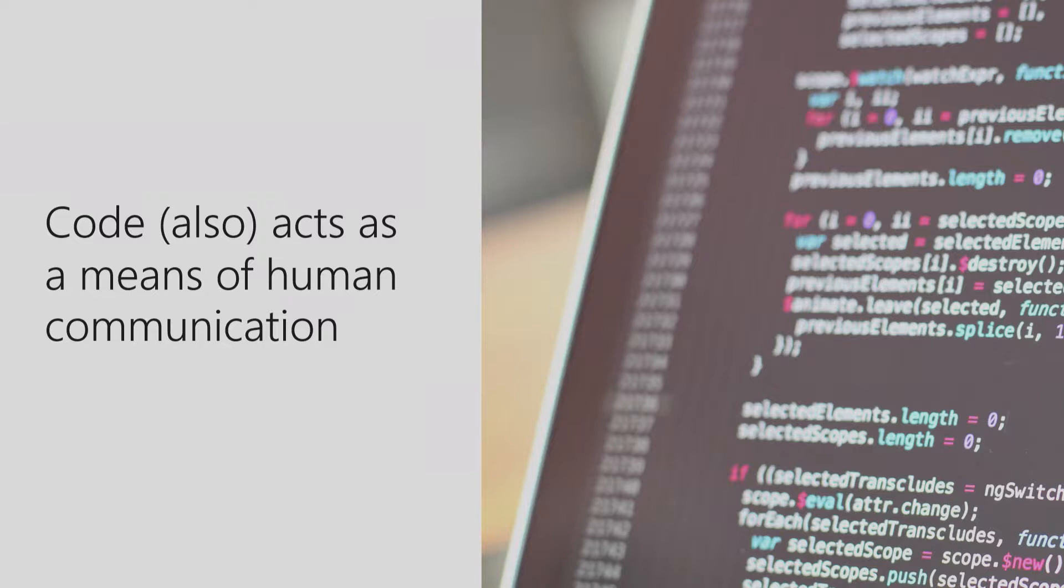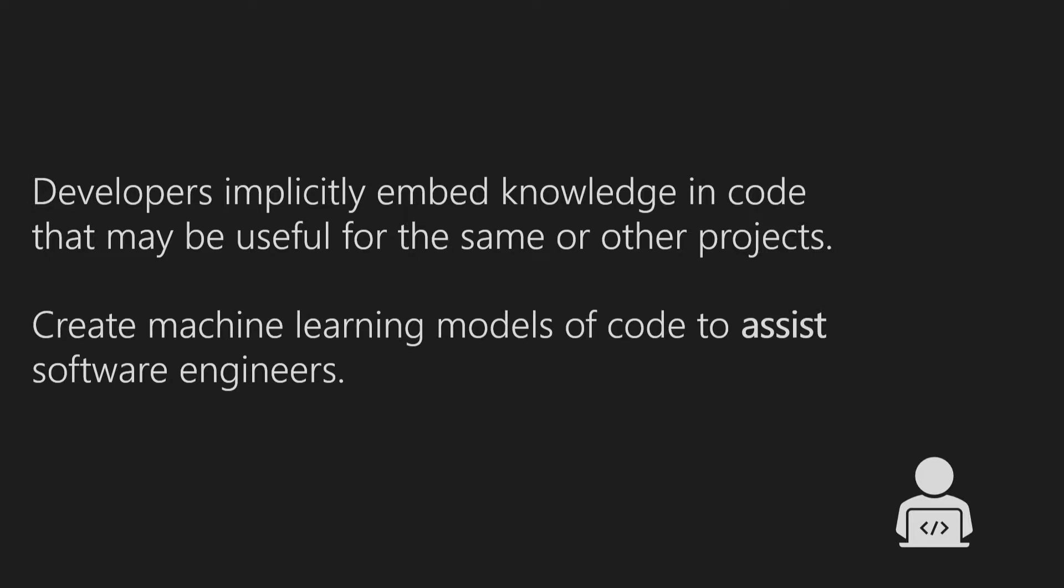These conventions are a form of a pattern, and since we have patterns, we can start using machine learning. So the idea is that developers implicitly embed knowledge in code bases that can be useful for others. What if we can statistically analyze the code itself and extract the knowledge to create tools that help software engineers? By building machine learning models of source code, we can create new tools that may allow new analysis and speed up or improve existing ones by using probabilistic reasoning.